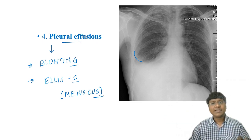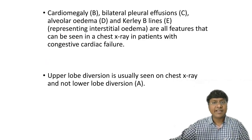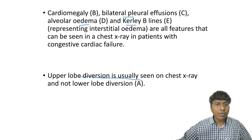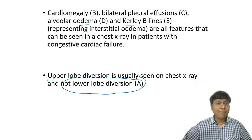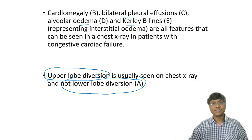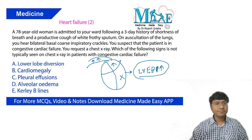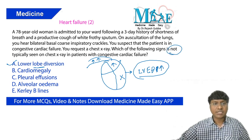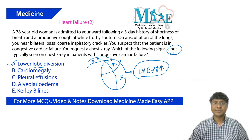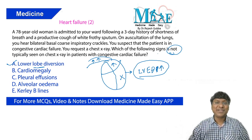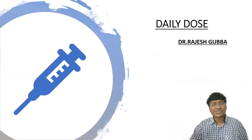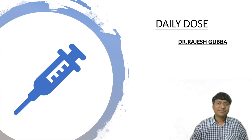In summary, the chest X-ray of a patient with heart failure shows bilateral pleural effusion, Kerley B lines, and alveolar edema, but you will not have lower lobe diversion — you will have upper lobe diversion due to pulmonary venous hypertension. Therefore, the answer to the question is lower lobe diversion, as it is not a typical sign. I hope you liked this short video — please follow us on the Daily Dose for daily updates. Thank you.